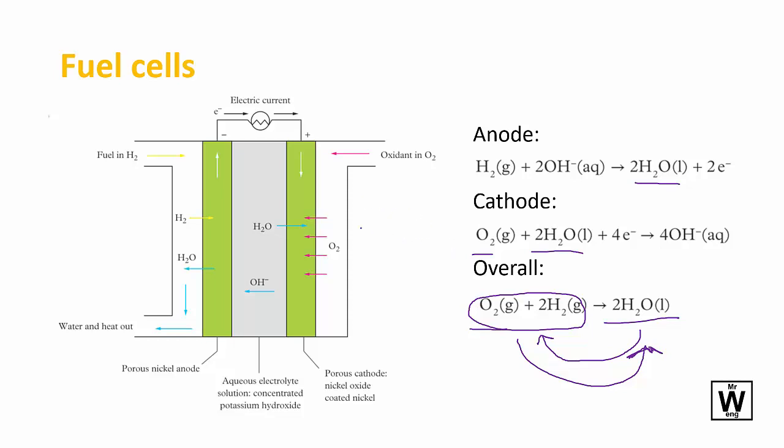You can see the electricity is being produced. Here we have the electrodes, which are both nickel. The electrolyte here is potassium hydroxide, so you need to pay attention to what's going on.